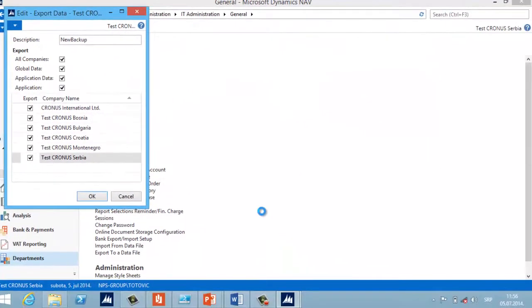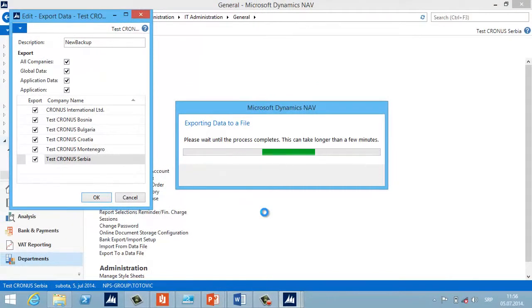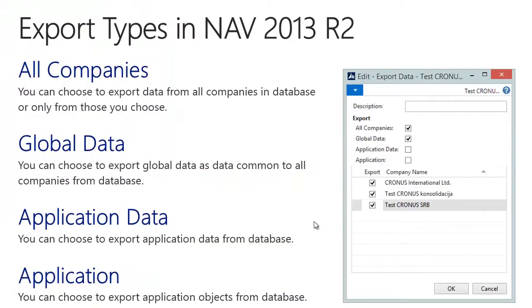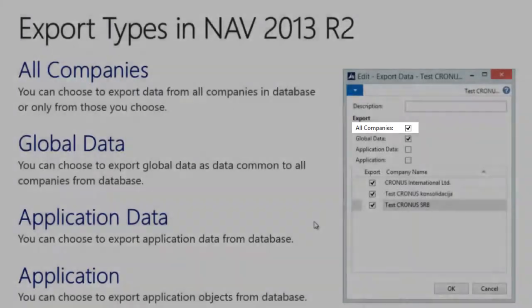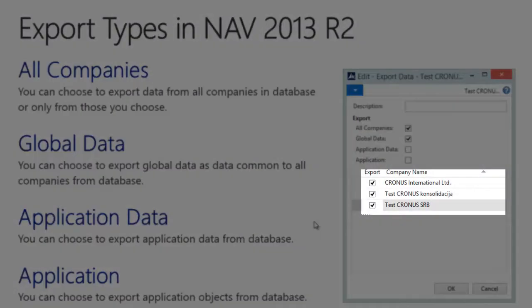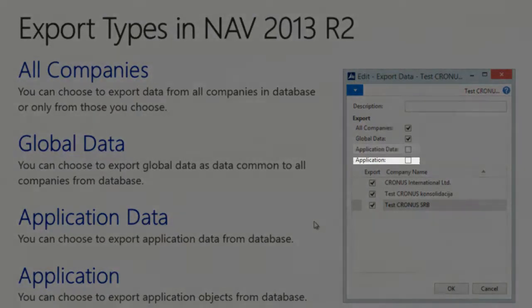The exporting process can take a few minutes depending on database size. When finished, you get a file with the .navdata extension. You can choose four export types: the main focus is on Companies — you can choose all companies or only one or more. You can also export data common to all companies, such as report lists, permission roles, user IDs, and printer selections, or choose to export application data or application objects.